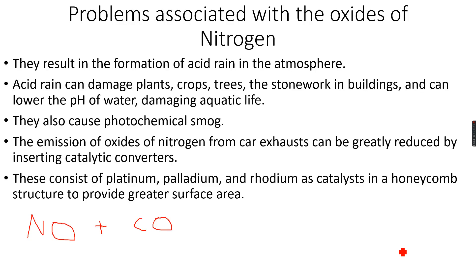Oxides of nitrogen are produced in car engines, and carbon monoxide is also formed in car exhausts. This happens because when fuel is burnt, sometimes the combustion is not complete — it is incomplete — and incomplete combustion of fuels results in the formation of carbon monoxide. Carbon monoxide is very poisonous; if we inhale it we can die instantly, and therefore we need to ensure that it is not emitted from car exhausts.